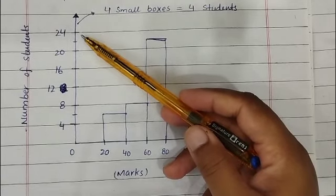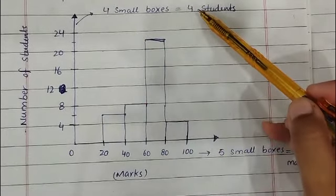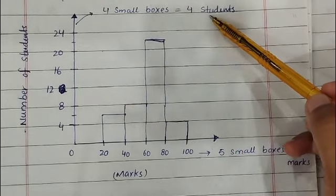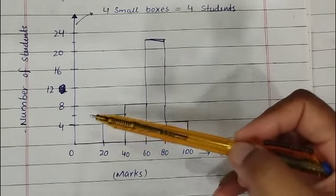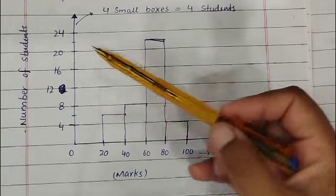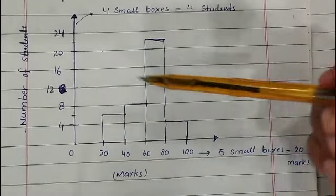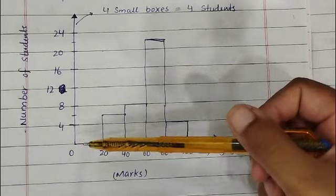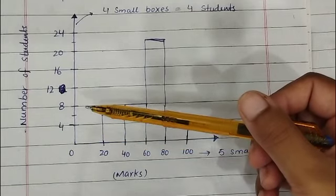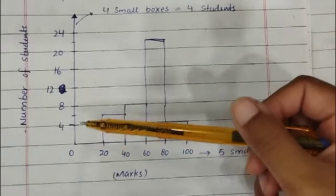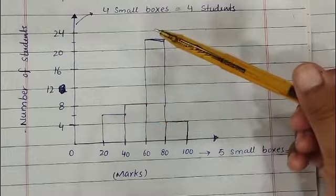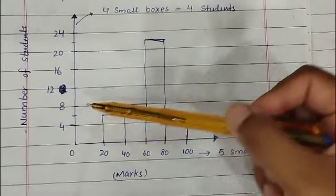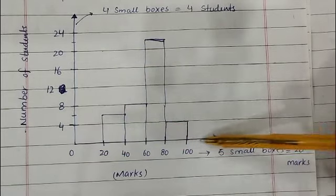For convenience, I have divided the y-axis into groups. The maximum frequency is 22, and I added two to get 24. I am taking four small boxes for every four students — that means one small box represents one student. You will count the small boxes given on the graph paper and use one small box as one student on the y-axis.